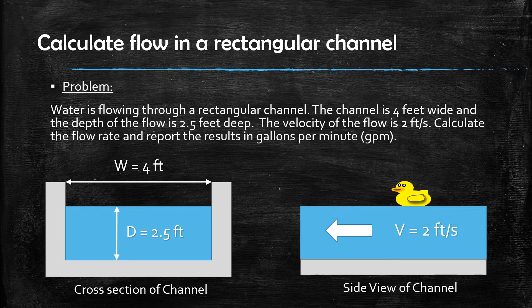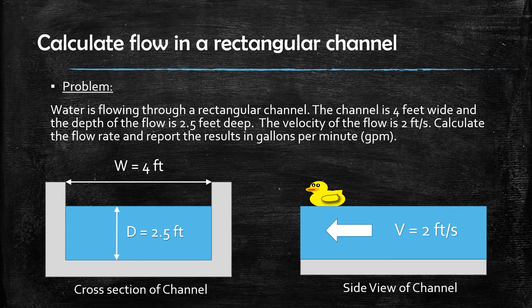We can also see from a side view that the velocity of the flow is two feet per second. In a real application, this channel would be flowing from one location and ultimately discharging to another location, very similar to the way a river flows.